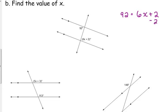So then we just solve for x. Subtract 2 from both sides. We get 90 is equal to 6x. Divide by 6. 15? Thank you. 15 is equal to x.